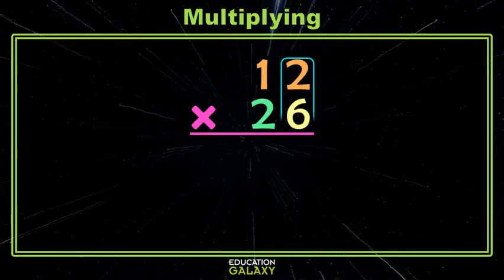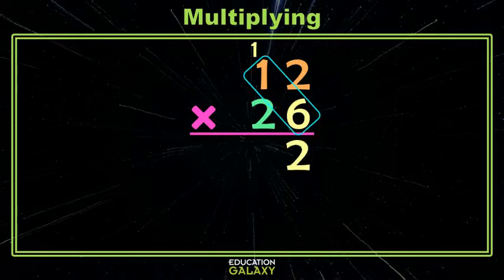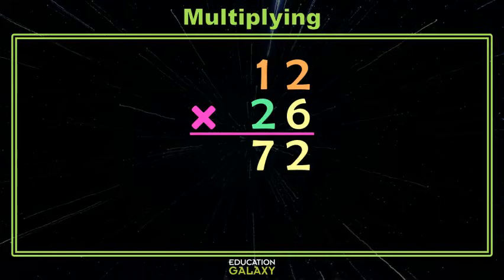Starting in the ones place, we have 2 times 6, which is 12. We leave the 2 and we carry the 1. Now we do 1 times 6 plus the 1 we carried, so that's 7.